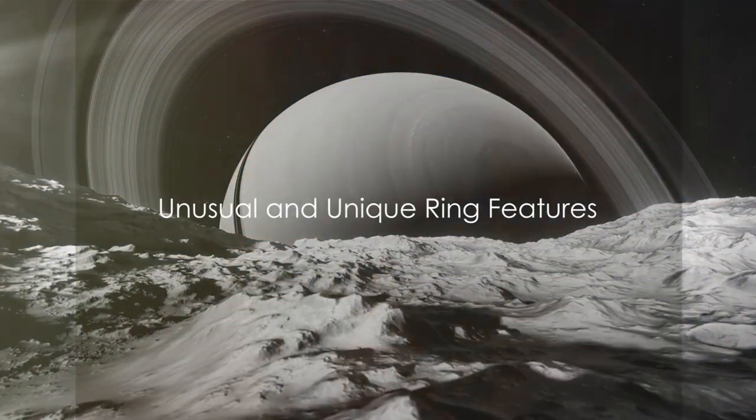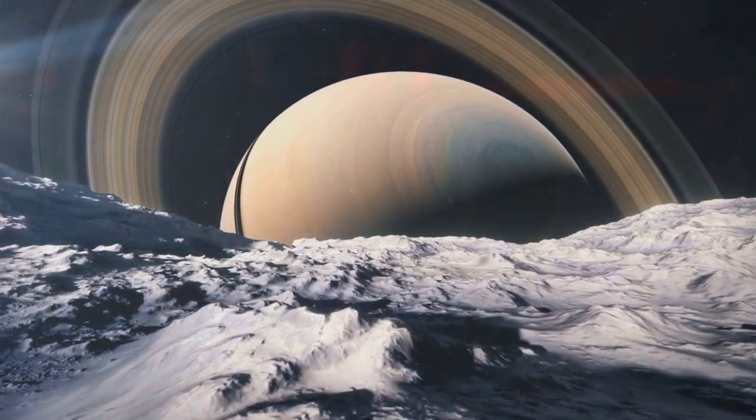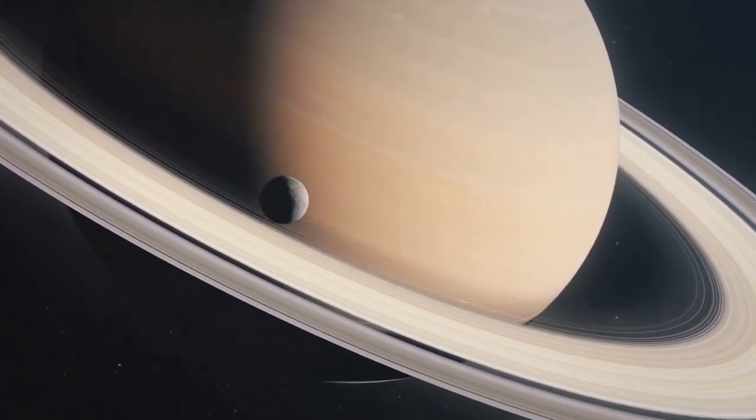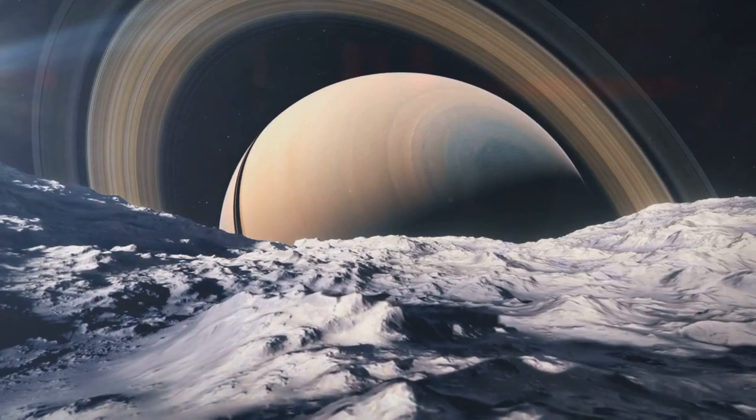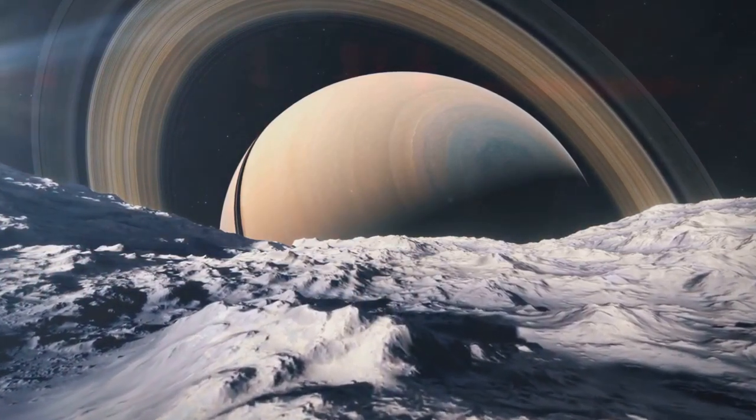Not all rings are created equal. Some boast unusual features that add to their intrigue. For instance, there are spiral density waves, ripples in the rings caused by the gravitational pull of nearby moons. These waves provide key insights into the ring's composition, thickness, and even their age.